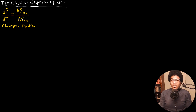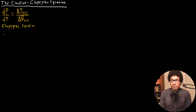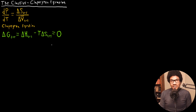Before we get into the Clausius-Clapeyron equation in any detail, I want to show that this equation can be re-expressed to involve the enthalpy of the transition by exploiting what we know about the Gibbs free energy at equilibrium. At equilibrium, delta G is equal to zero. So for any general transition, delta G equals delta H minus T·delta S, and since we're at equilibrium, this whole thing equals zero. Since it's equal to zero, we can rearrange to express the entropy in terms of enthalpy, giving us delta S for the transition equals delta H for the transition over T.